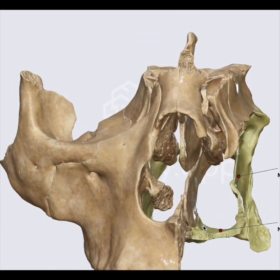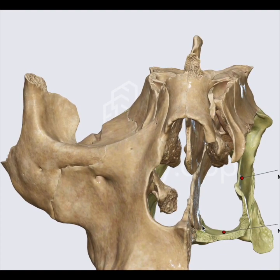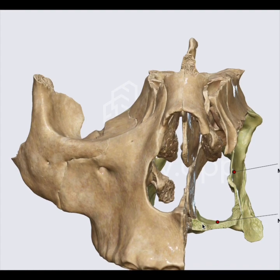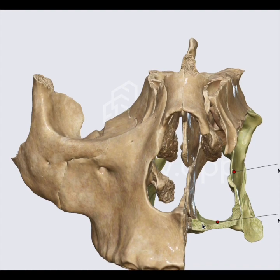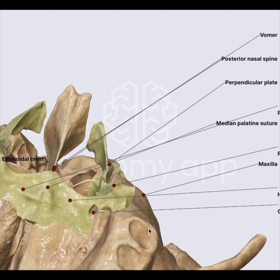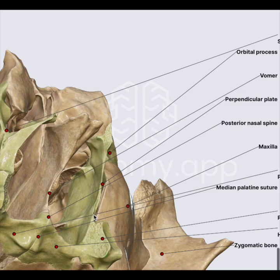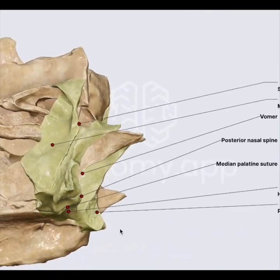The second point: nowadays we are doing a lot of office-based procedures under local anesthesia. The greater palatine foramen is very useful for us — if we identify it and give a block with a local anesthetic agent, you can actually perform a great amount of sinus surgery under local anesthesia.